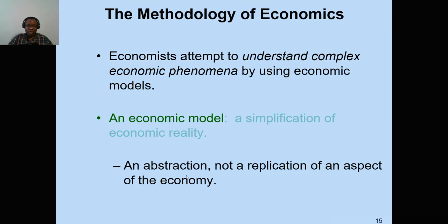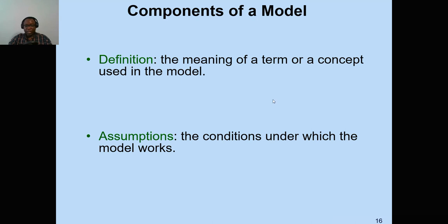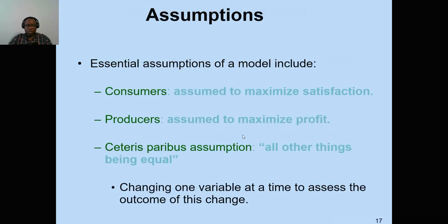In creating a model, we do what is called an abstraction — not a replication of reality, but we extract a certain aspect of the economy and represent it using a mathematical equation, a graph, or a description. Components of a model include: first, defining the terms — the meaning of the concepts and symbols used in the model. Second, the assumptions, which are the conditions under which the model is going to work.